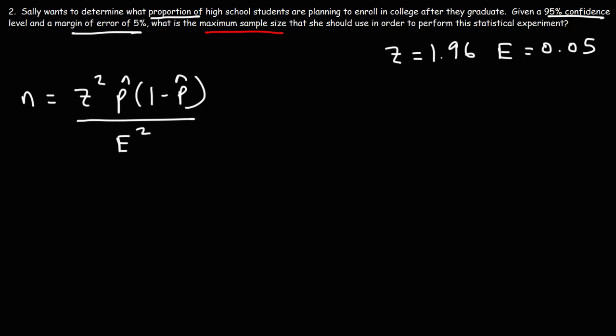Now we need to determine what value should we use for p̂ because Sally wants to determine the proportion of high school students who are planning to enroll in college after they graduate. So she doesn't know what this value is. So what value should she use?